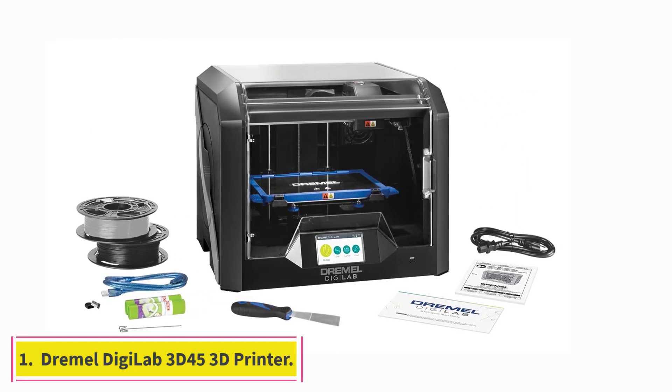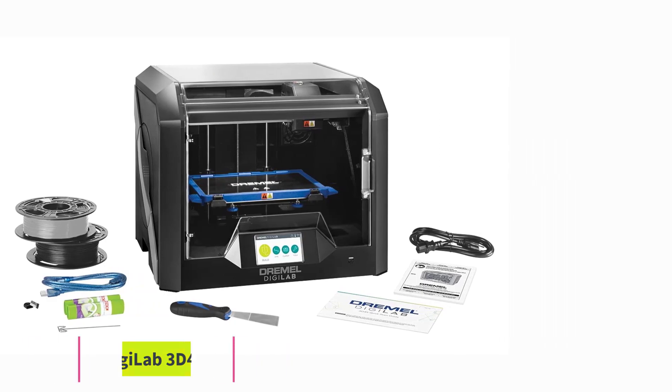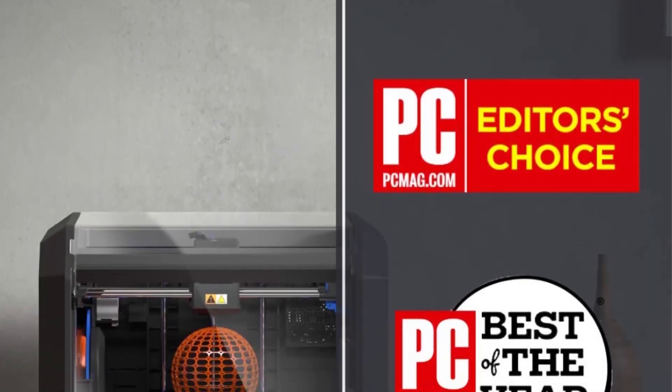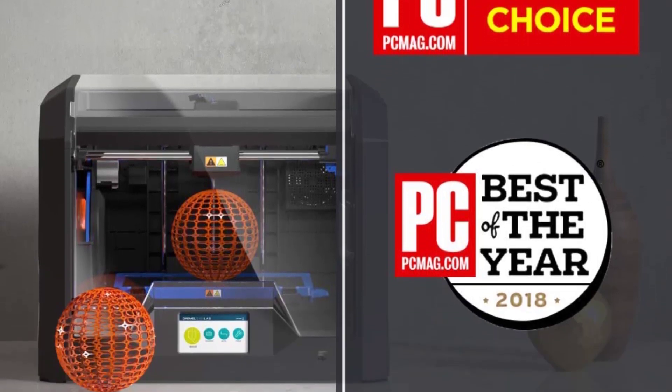Starting at number 1, Dremel DGLAB 3D45 3D Printer. Why it made the cut? Go from unboxing to your first print in under 15 minutes using the printer's large full-color touchscreen with intuitive icons for easy setup and operation.